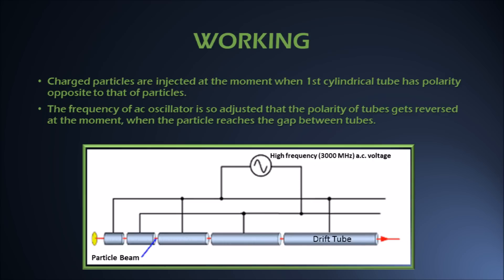The frequency of AC oscillator is so adjusted that the polarity of tubes gets reversed at the moment when the particle reaches gap between first and second cylindrical tube. As a result, the particle gets again accelerated towards second tube.